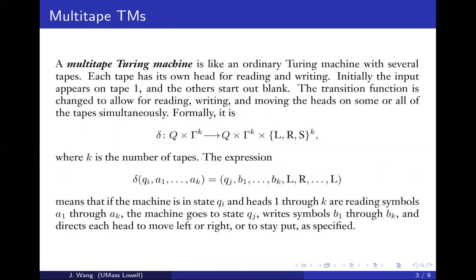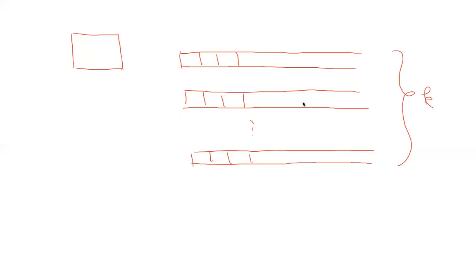In this particular case we are thinking of several one-sided unbounded tapes, each with its own rewrite head. So this multi-tape Turing machine has a finite state control and a number of one-sided unbounded memory tapes — let's say we have k of them. Each tape has its own rewrite head.